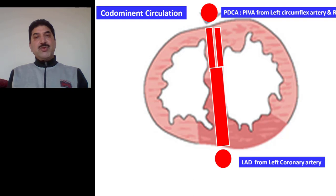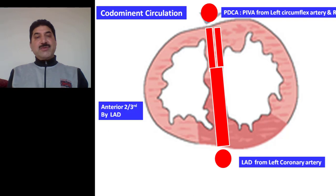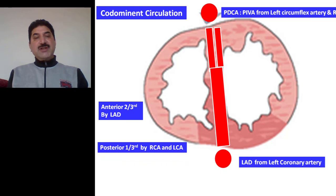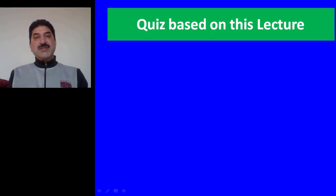In this way, the posterior one third of the septum in co-dominant circulation is supplied by branches from both the right coronary artery and the left circumflex coronary artery. So the anterior two thirds of the septum is supplied by the left anterior descending coronary artery, and the posterior one third of the septum is supplied by both the right coronary artery and left coronary artery. This type of circulation has the best prognosis in myocardial infarction.